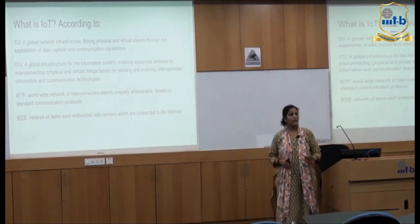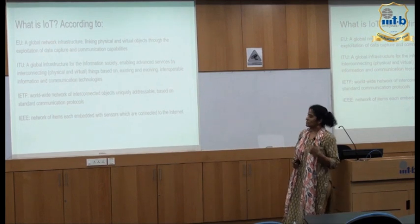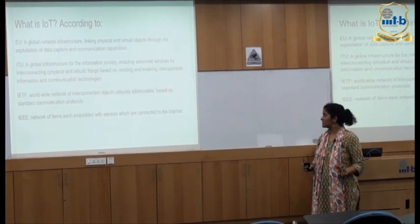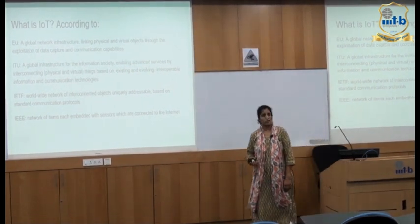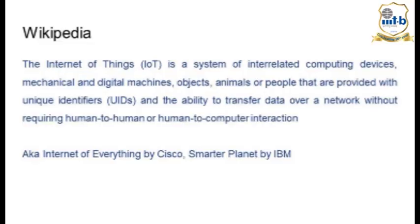Wikipedia gives a more concise definition. The Internet of Things is a system of interrelated computing devices, mechanical and digital machines, objects, animals or people that are provided with unique identifiers and the ability to transfer data over a network without requiring human-to-human or human-to-computer interaction.